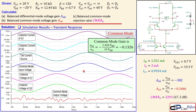This concludes example three on BJT differential amplifiers. Example one used an ideal current source, example two used a resistor for the tail current, and here in example three a simple current mirror was used. The current mirror significantly increases the common mode rejection ratio compared to a resistor — which is one of the main reasons to use a current mirror. Example four will explore a more advanced current source. Stay tuned!